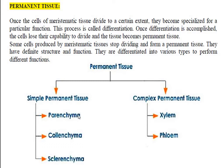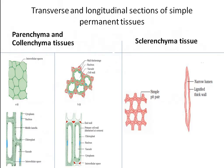Now, these are new names for you — parenchyma, colenchyma, and sclerenchyma — they are simple permanent tissues. We are going to learn the structure and function of simple permanent tissues in plants. The transverse and longitudinal sections of simple permanent tissues are given here. Transverse section means cross section, and longitudinal section means a section along their length. This is the cross section of parenchyma, this is the cross section of colenchyma, and this is the cross section of sclerenchyma. This is the longitudinal section.